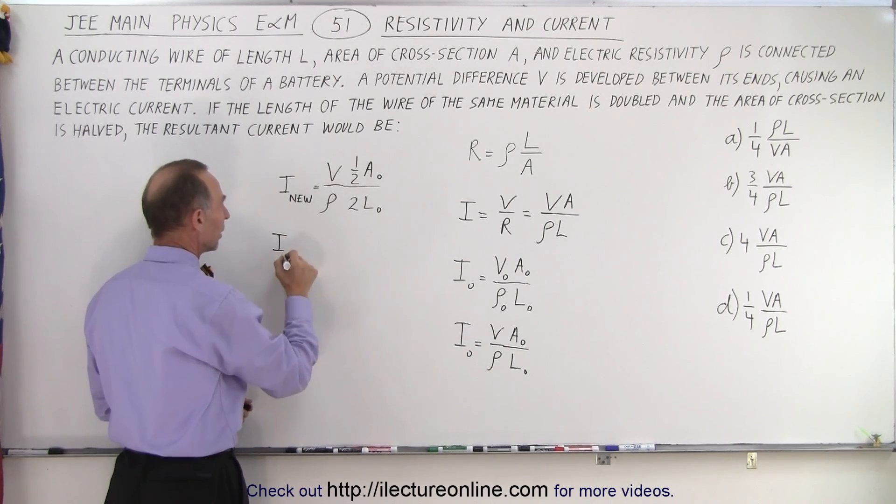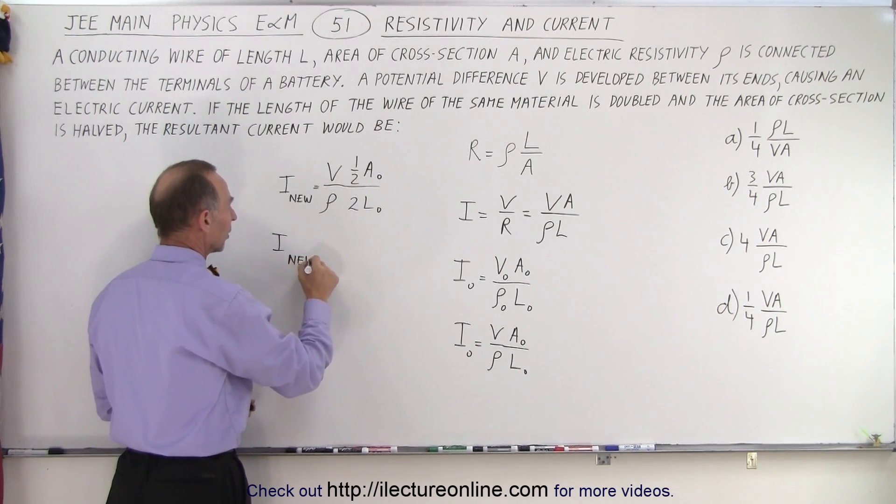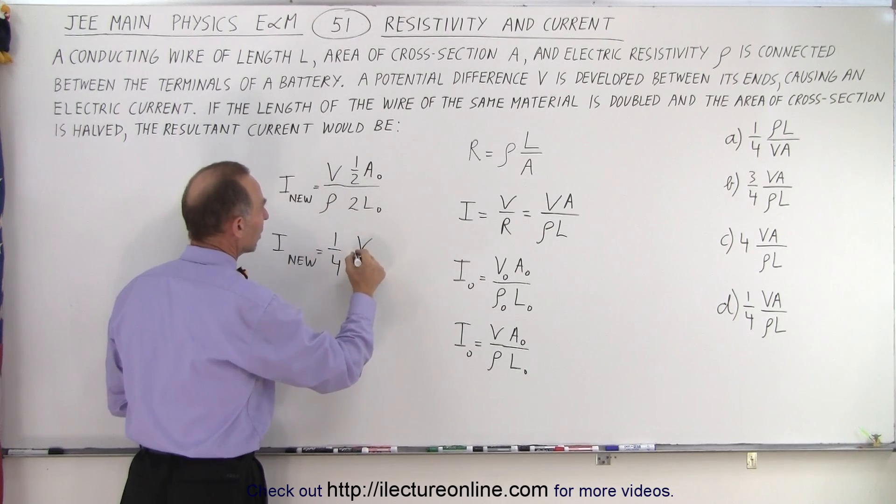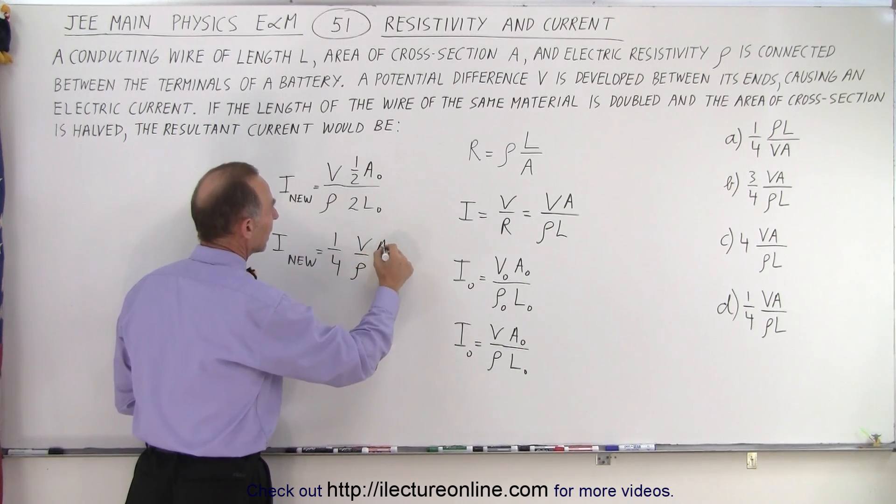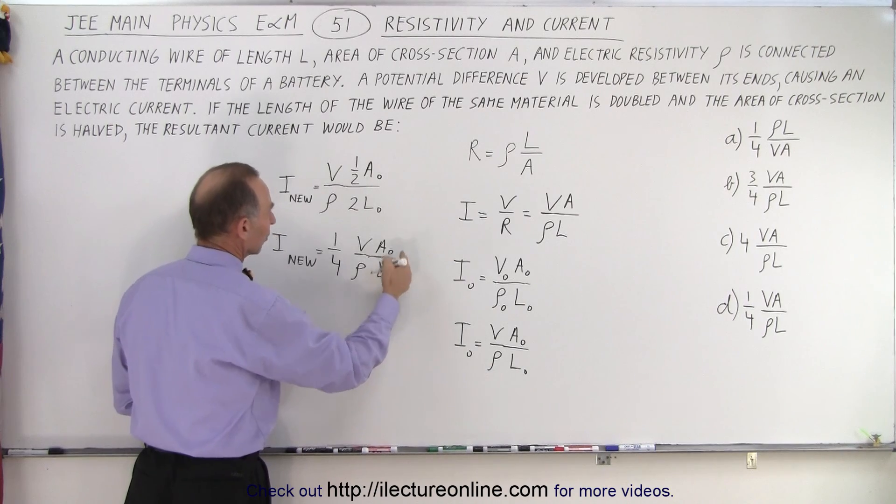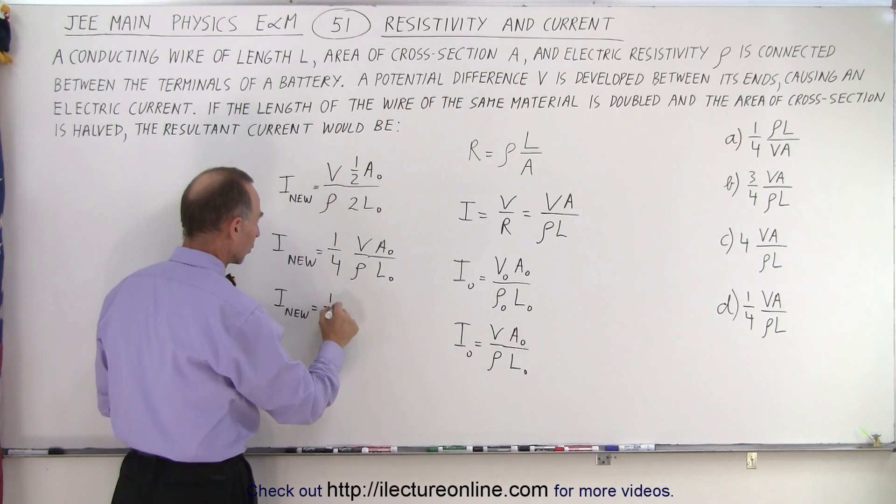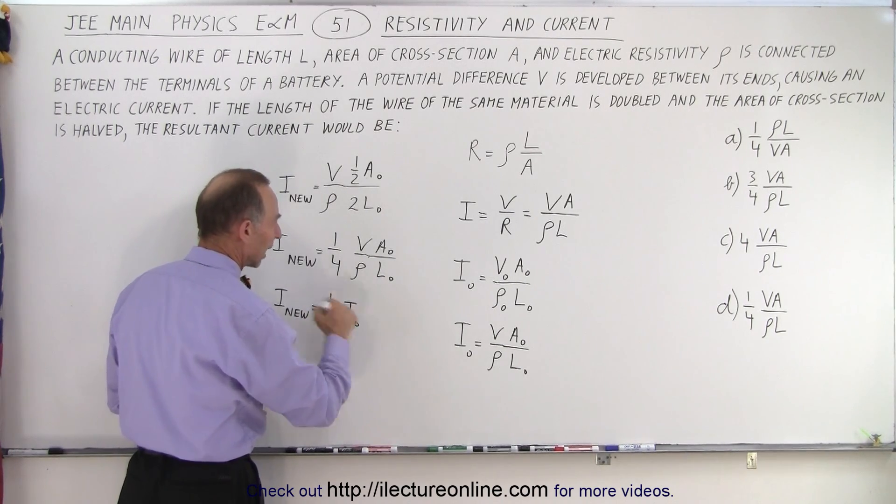When we clean that up, the new current is equal to one over four times V over rho, A initial over L initial, which represents the initial current. So I new equals one-quarter the original current, I sub-naught.